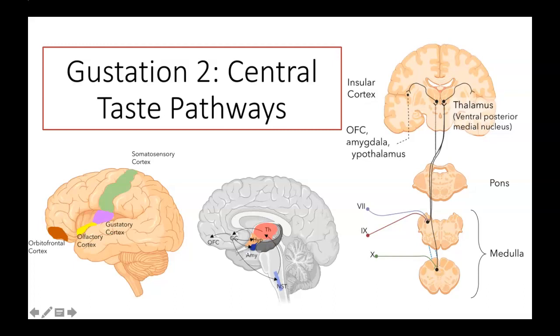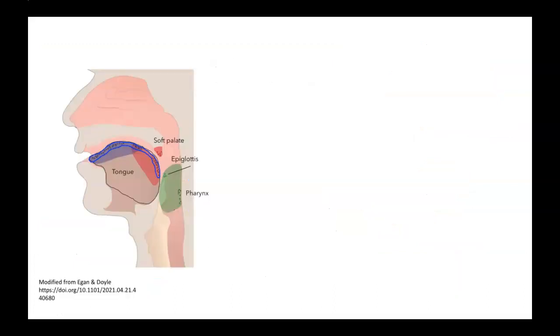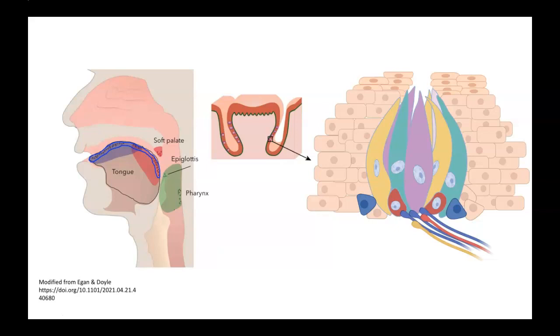In this video we're going to look at central taste pathways. In a previous video we looked at peripheral mechanisms. I talked about how the surface of the tongue and other parts of the mouth are studded with little bumps. Those bumps contain structures called taste buds, and the taste buds themselves contain numerous taste receptor cells that come in a few different types. Some are involved in detecting specific qualities like sweet, savory, bitter, sour, or salty. There are also supporting cells and stem cells that regenerate the taste receptor cells because they turn over every 10 days or so.